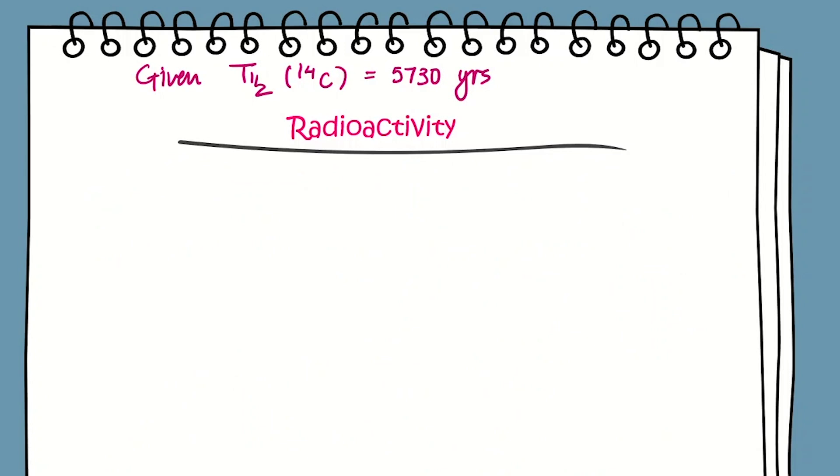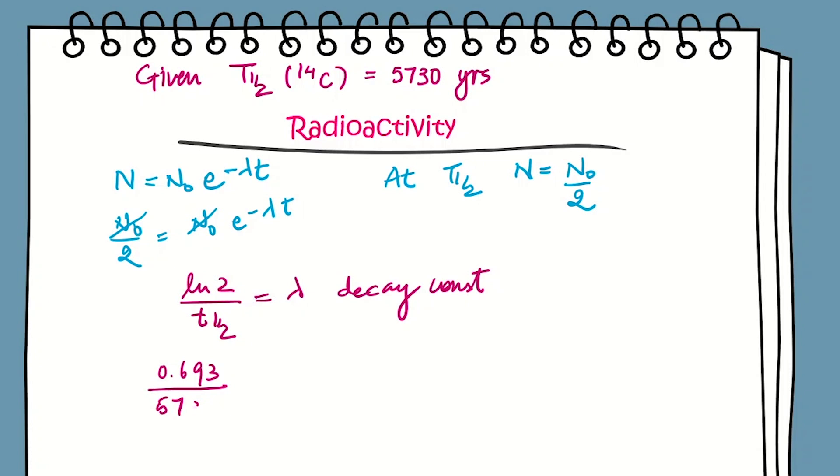We are given the half-life of 14C carbon. Now we have to find the decay constant. We know N = N₀e^(-λt), this is the exponential decay equation. At half-life t_half, the number of nuclei becomes half. After rearranging, we can write λ = ln2/t_half. The decay constant is ln2, which is 0.693, divided by the half-life 5730 years. Calculating this, we get 1.21 × 10^-4 per year.